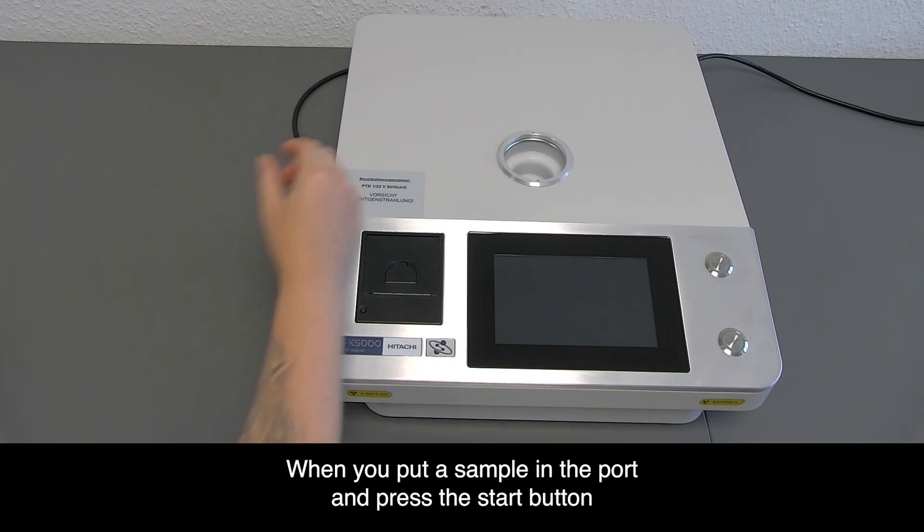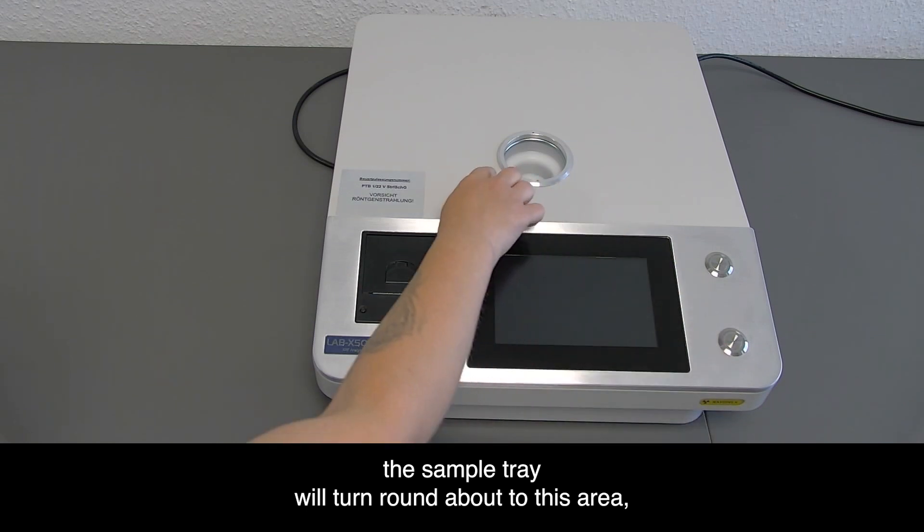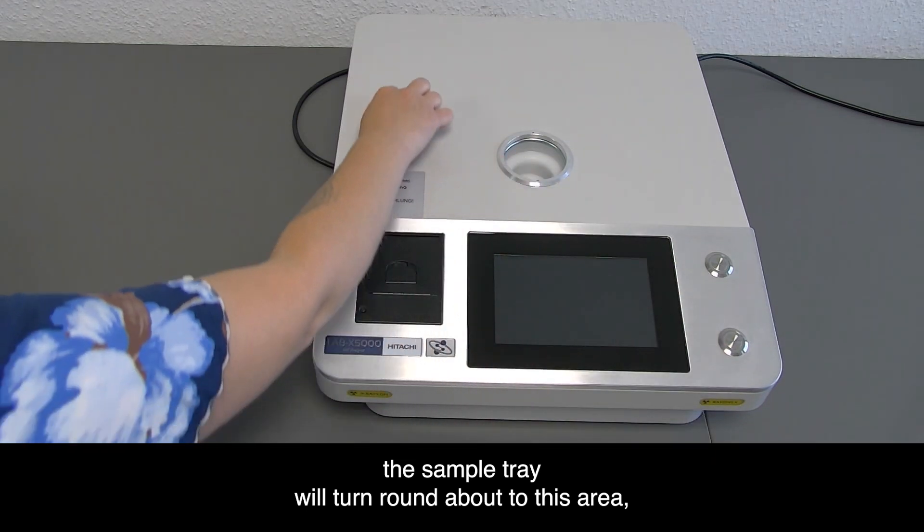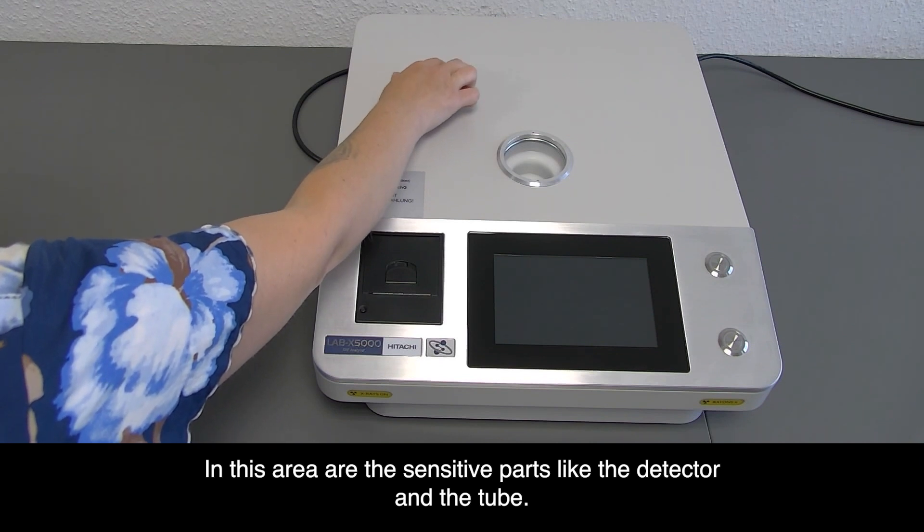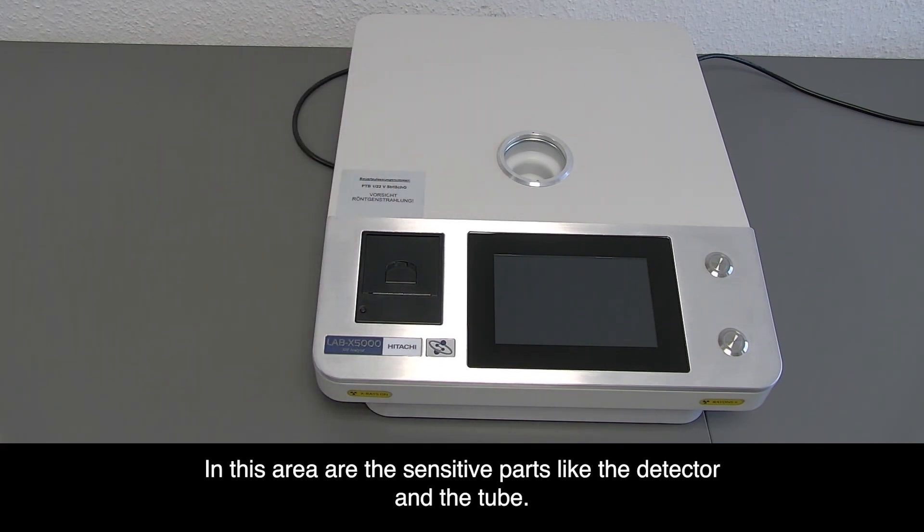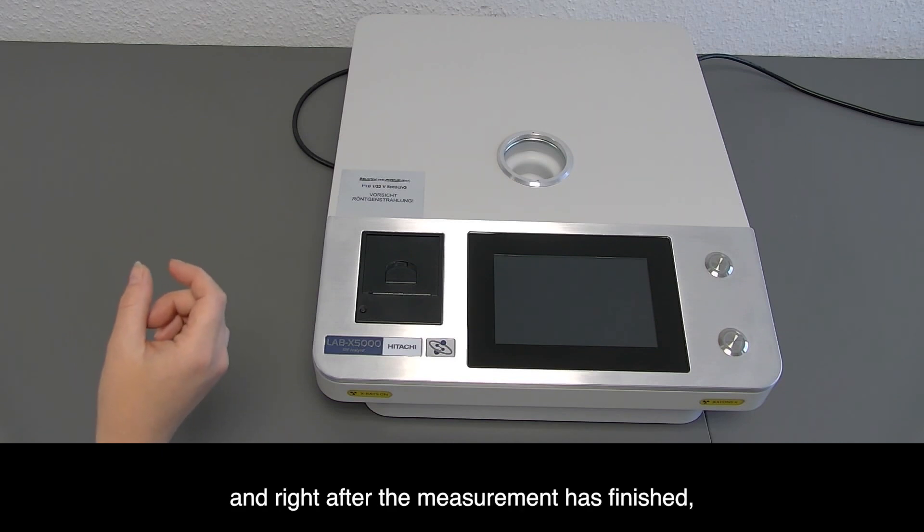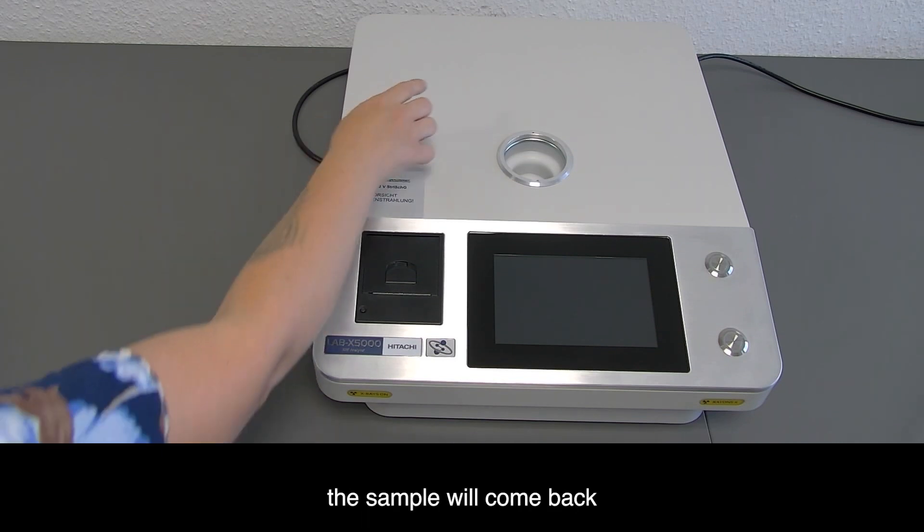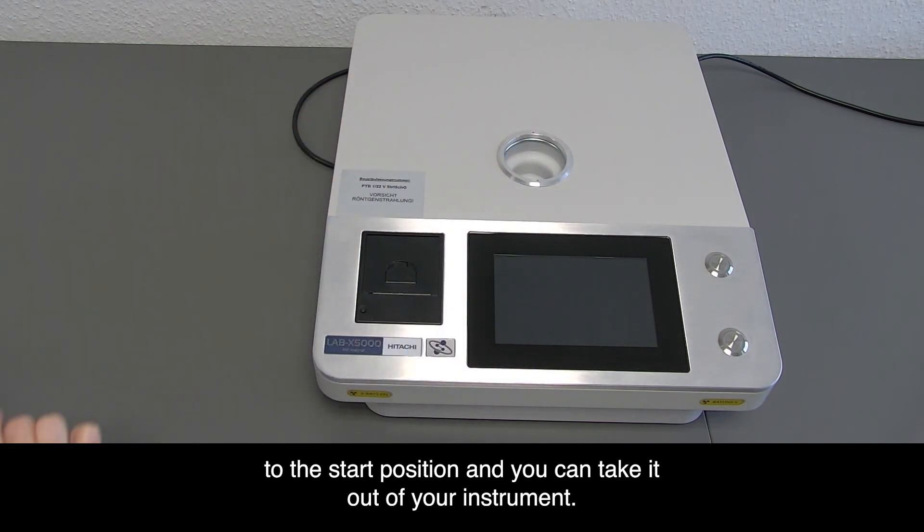When you put a sample in the port and press the start button, the sample tray will turn around to this area. In this area are the sensitive parts like the detector and the tube. Only during the measurement the sample will stay in this position, and right after the measurement has finished, the sample will come back to the start position and you can take it out of your instrument.